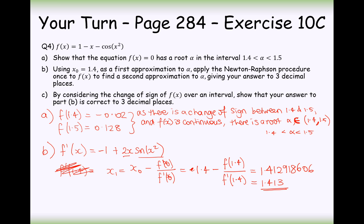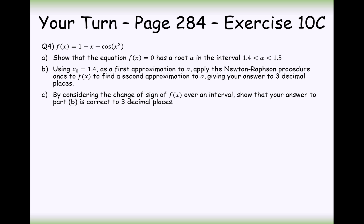So, 1.413 is our answer there, and the next part here is by considering the change of sign of f(x) over the interval, show that your answer is correct to three decimal places. So, the lower bound here is going to be 1.4125, and the upper bound here is going to be 1.4135. So, let's plug this into our original function.